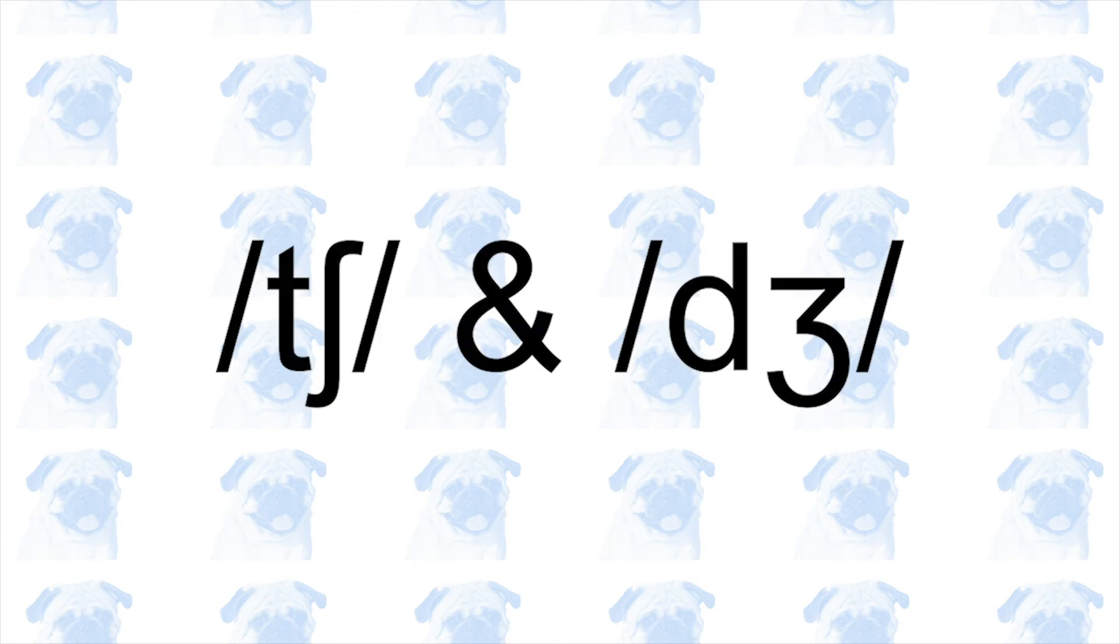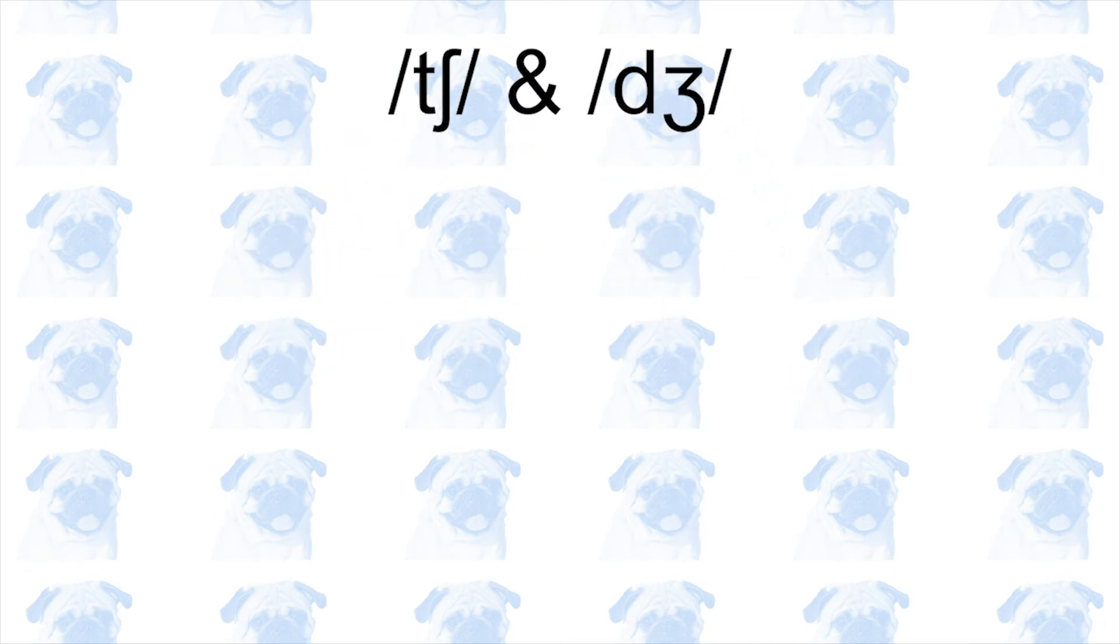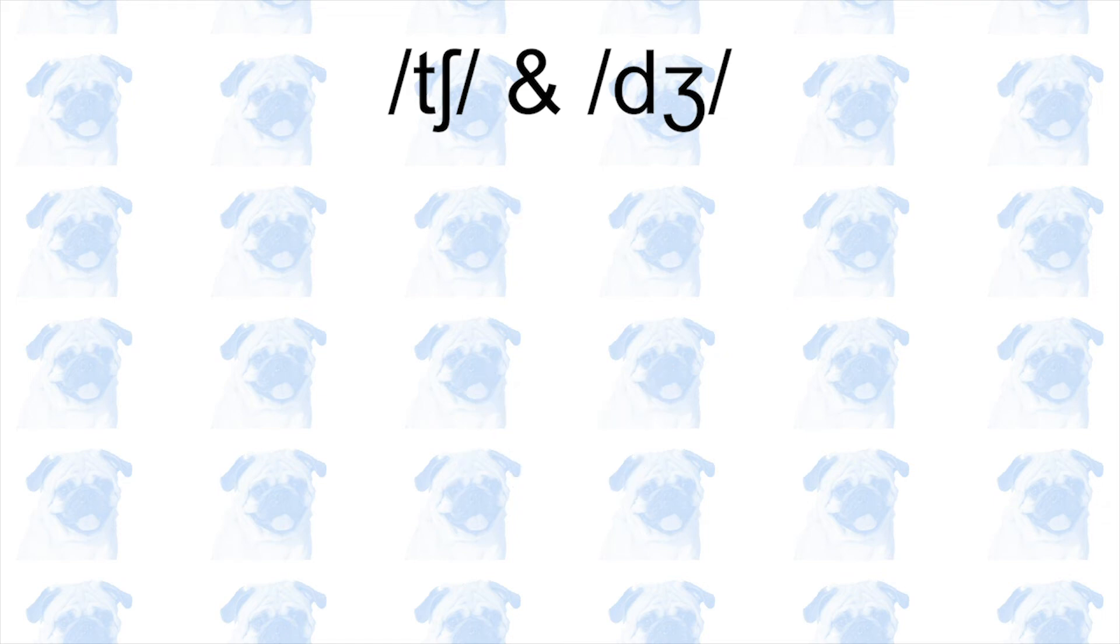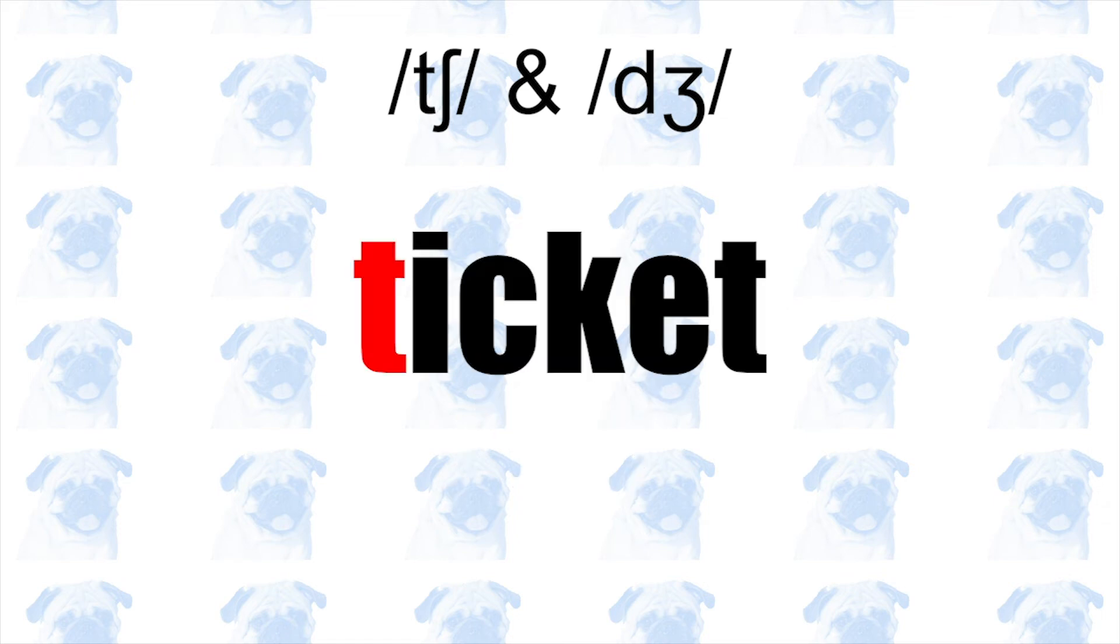Now, we move on to the affricates. Both of these sounds exist in Japanese, so they are not a problem for Japanese speakers. However, since the combination T plus I in Japanese becomes CHI instead of T, English words containing this sequence may sometimes be affected. For example, the word TICKET starts with T plus I, so in Japanese, this word is pronounced CHIKETTO.